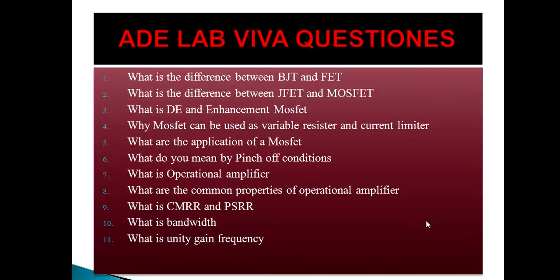CMRR means the common mode rejection ratio. This is the ratio of open loop gain to the common gain, that is AD by AC. Normally an operational amplifier has to amplify the differential signal and should not amplify the common signal. That is why the common mode rejection ratio indicates to what extent it will reject the common mode signal.